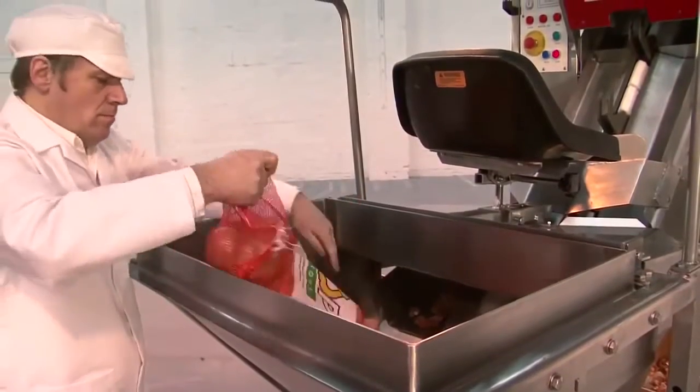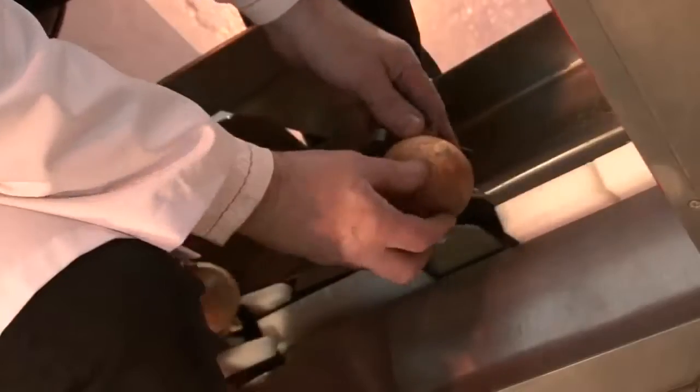The onions are picked up from the hopper automatically and then positioned by the feed operator so that the tops and tails are set horizontally across the carriers.